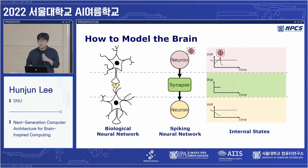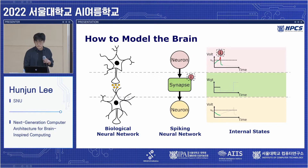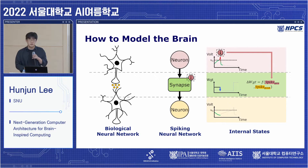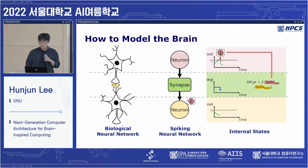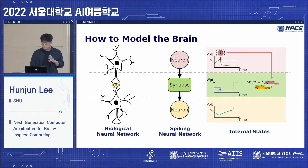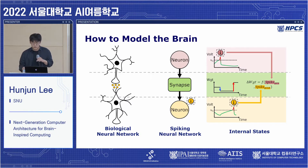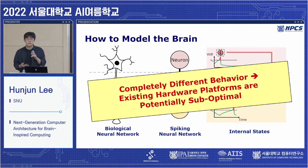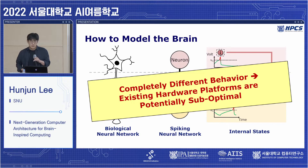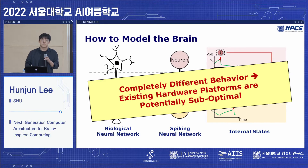These states evolve over time. At some point, a neuron's membrane voltage may exceed a certain threshold and the neuron fires a spike. This spike affects changes in other states — it first changes the weight of the synapses by triggering learning, and as the spike arrives at the destination neuron, it affects how the voltage of that neuron changes. The brain behaves in a completely different manner compared to artificial neural networks used in deep learning, implying that existing hardware platforms such as GPUs or tensor processing units may be suboptimal for simulating the brain.